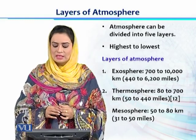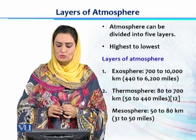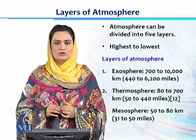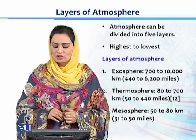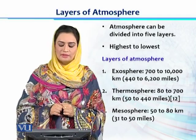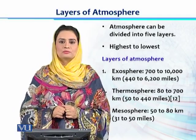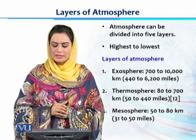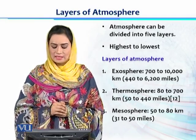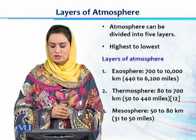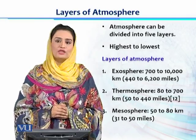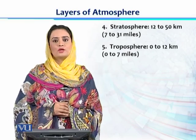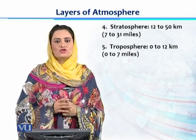The layers of the atmosphere from highest altitude to lowest are: first, the exosphere, which is 700 to 10,000 km from sea level; next is the thermosphere, which is 80 to 700 km from sea level; and the mesosphere, which is 50 to 80 km from sea level.